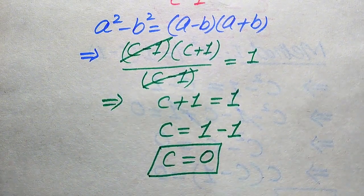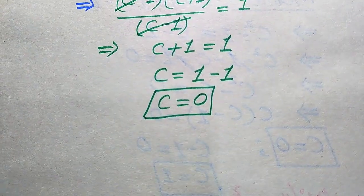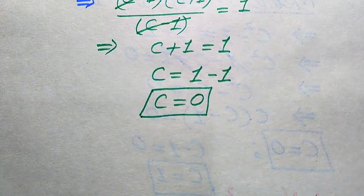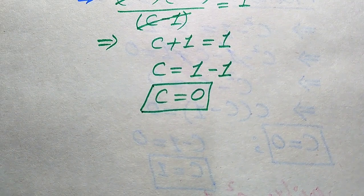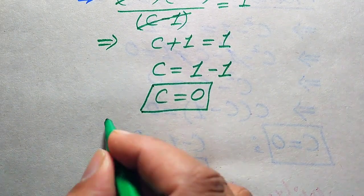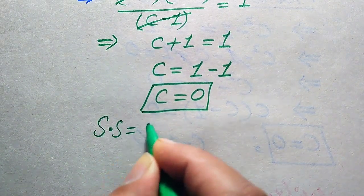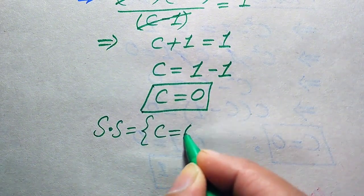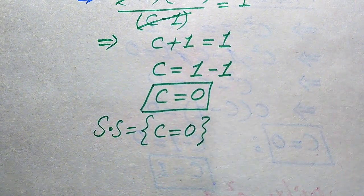In Method 2 we obtain only one root directly: c = 0. We already verified in Method 1 that this value satisfies the original equation. Therefore, the solution set of this problem is c = 0.